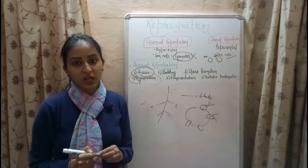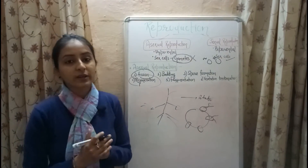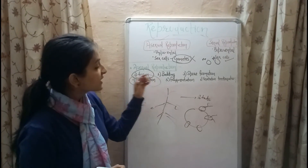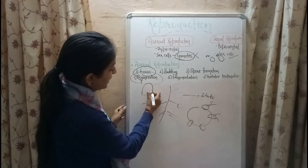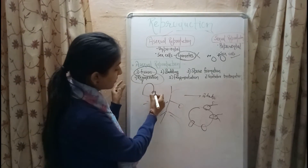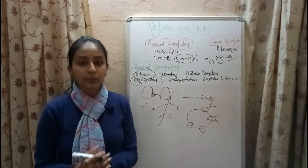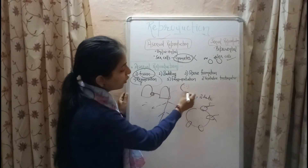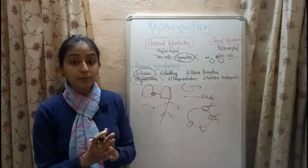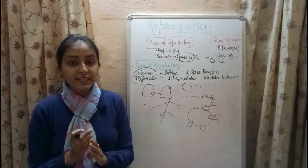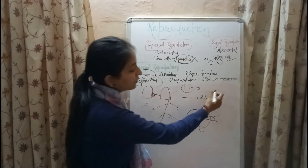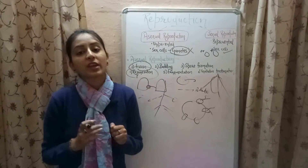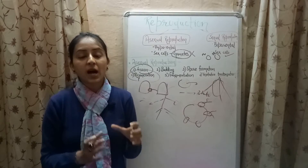Let's quickly revise everything. Fission is the type of asexual reproduction in which the body of a unicellular organism splits into two or more parts forming new organisms. Budding is the process in which a small part of the body grows out as a bud and forms a new organism. Spore formation involves reproductive units called spores producing new plants. Regeneration is the process of getting back a complete organism from its body parts. Fragmentation is the splitting of a multicellular organism's body into parts forming complete organisms. Vegetative propagation is the type of asexual reproduction in plants in which new plants are obtained using parts of the old plant.